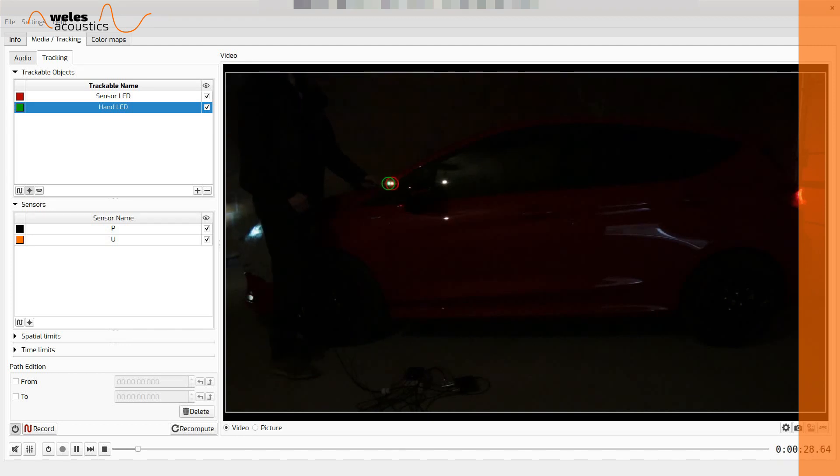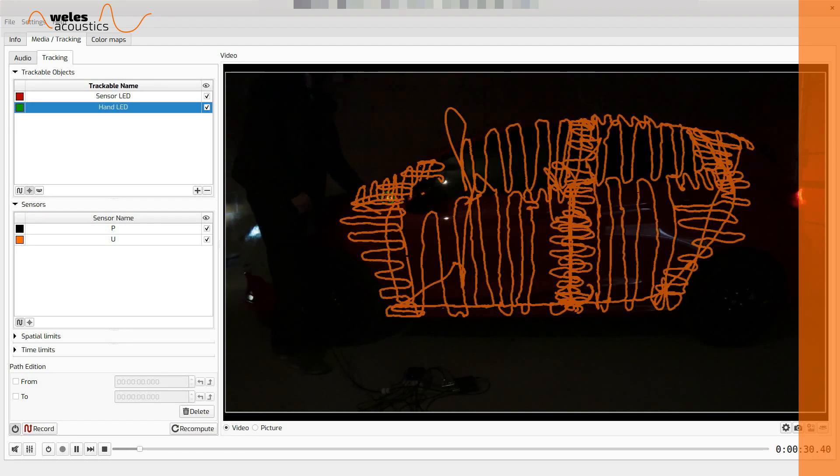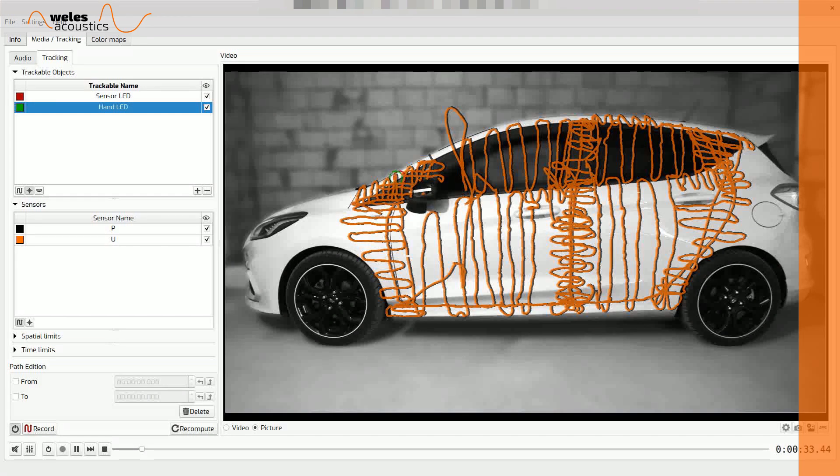You can always see which areas of the noise source still require your attention by looking at the scanning trace. Once the scanning is finished, Veles SIMS will compute and overlay the image of the car with a sound map.